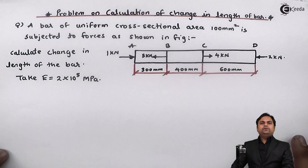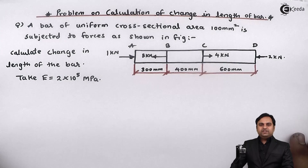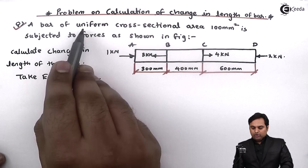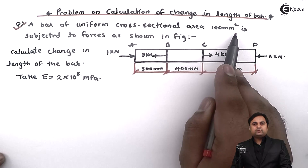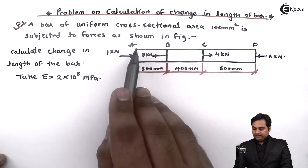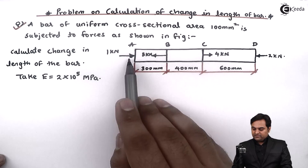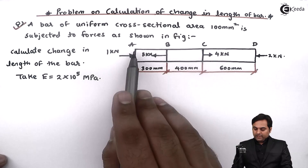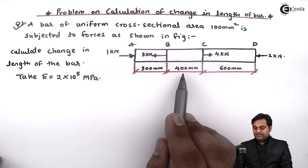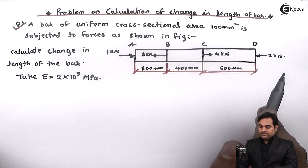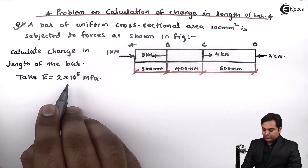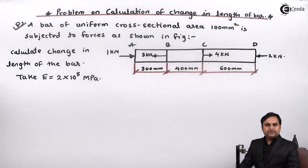Hello students, in this video we are going to see a problem on calculation of change in length of a bar. We have a question: a bar of uniform cross-sectional area 100 mm² is subjected to forces as shown in the figure. The bar is divided into three parts: AB, BC, and CD, with lengths 300 mm, 400 mm, and 600 mm respectively.